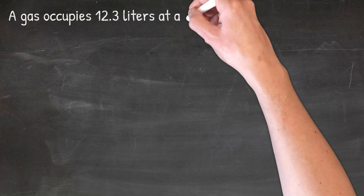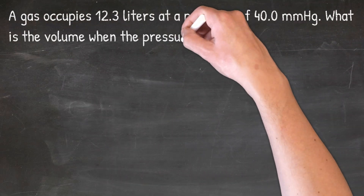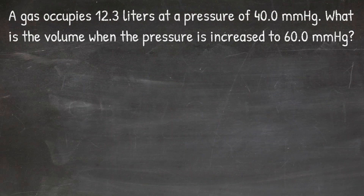In our first example, a gas occupies 12.3 liters at a pressure of 40 millimeters of mercury. What is the volume when the pressure is increased to 60 millimeters of mercury? When looking at solving gas law problems, you want to make sure you check what units you are given in the problem. This will help you know whether it's Boyle's Law, Charles' Law, Guy-Lussac's Law, Avogadro's Law, or the ideal gas law formula.